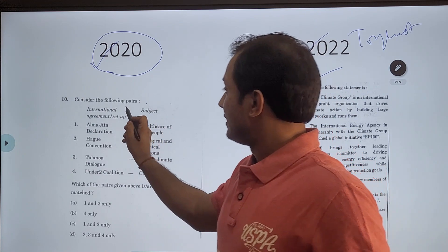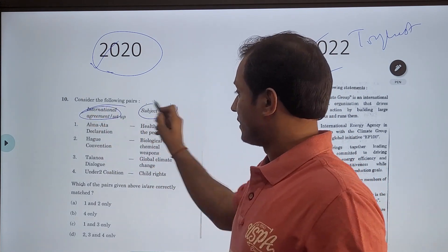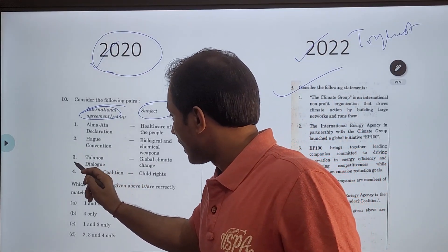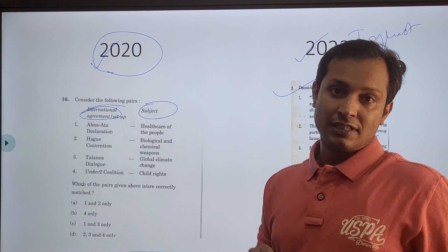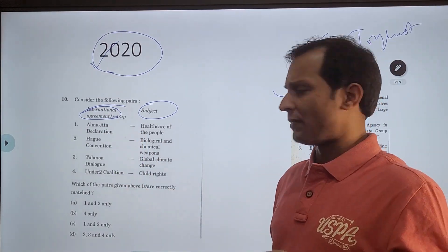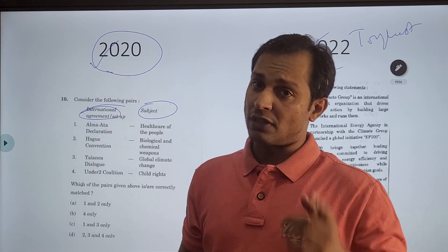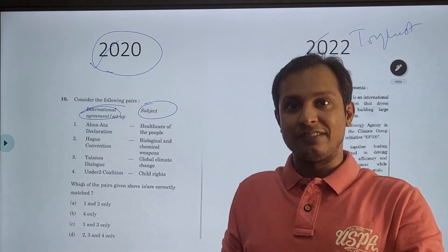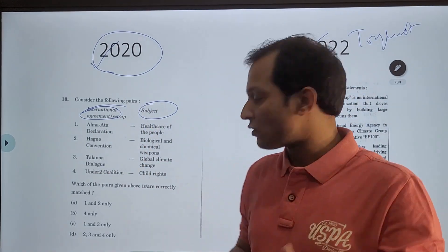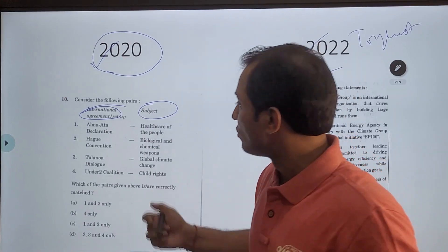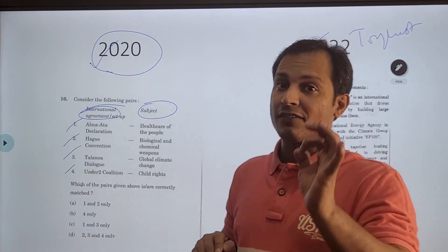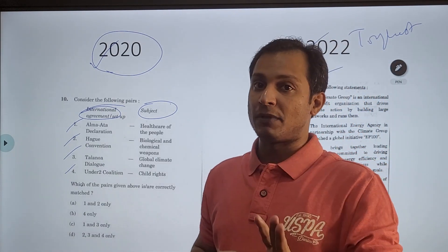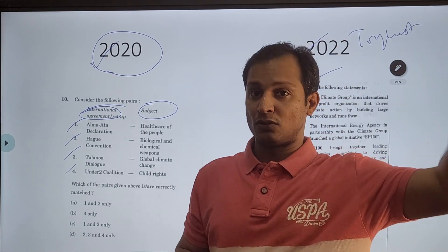Consider the following pairs — international agreements and their subjects — Alma Ata Declaration, Hate Convention, Taranoa Dialogue, and Under 2 Coalition. To solve this, you must have solved the previous year question. I told you that whenever you solve a pair question involving national parks, species, or international organizations, don't just get the answer — try to know something about all four options, particularly the environmental bodies.